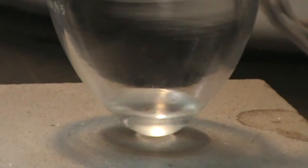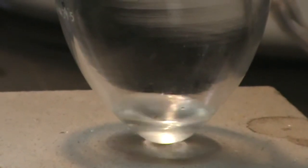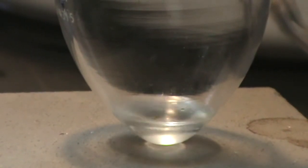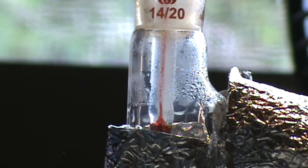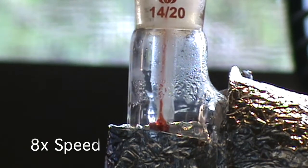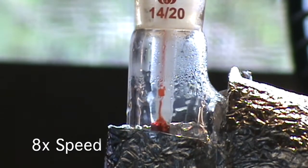The boiling flask and still head must be wrapped in aluminum foil so that it reaches the needed temperature. Here's the rest of the distillation footage sped up to eight times.